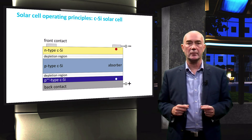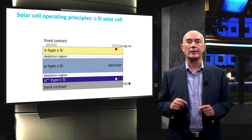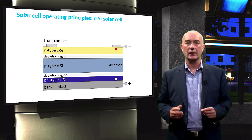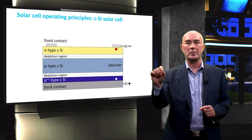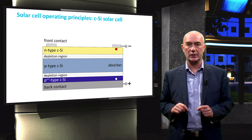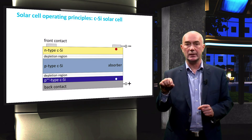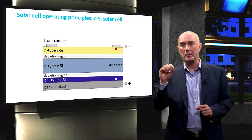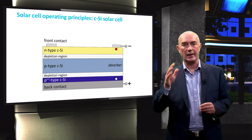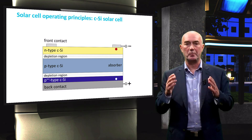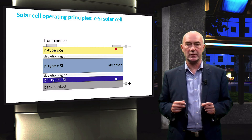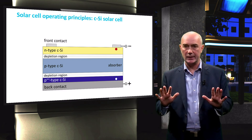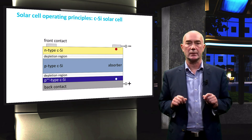Finally, photogenerated electrons collected in the N-type region will charge this region negatively with respect to the heavily doped P-type crystalline silicon region where the photogenerated positively charged holes are collected. We can measure this voltage difference between the N-type and heavily doped P-type crystalline silicon regions through the front and back electrodes that are attached to the respective regions.